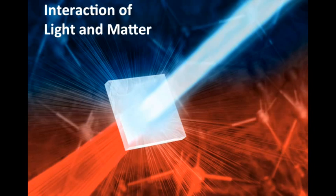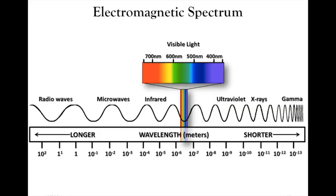From here on we're going to talk about the interaction of light and matter. We're going to focus eventually on just visible light, but we'll think more broadly initially. For matter, we ultimately want to focus on minerals, but it's useful to think about how light interacts with oils or liquids and even glasses, before coming back to light interacting with minerals.